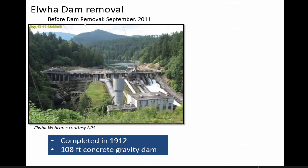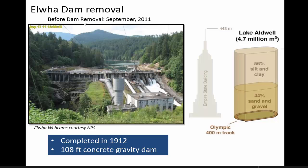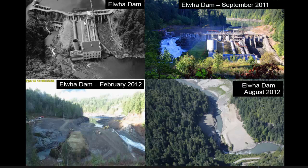This is what the Elwha Dam looked like in September 2011 when they started to take it down. It was completed in 1912 and was a little over 100 feet high. In terms of sediment, there was about 5 million cubic meters — roughly the size of the Empire State Building combined with an Olympic oval track — and the majority of that was silt or clay. Dam removal started in September 2011, and by April 2012 the dam was gone and passable. They created a coffer dam upstream and shunted water to one side while deconstructing the other side, flipping back and forth until eventually it was passable.